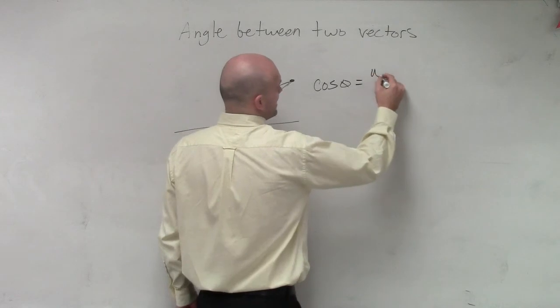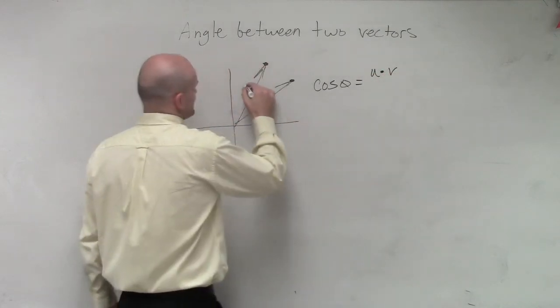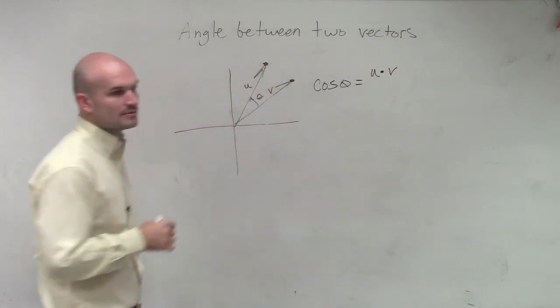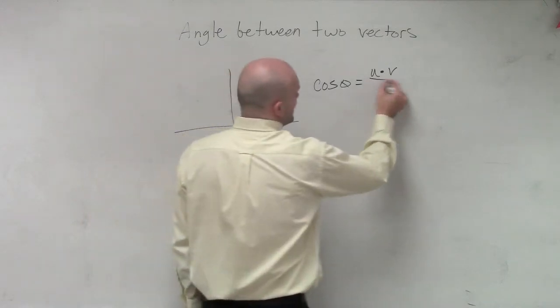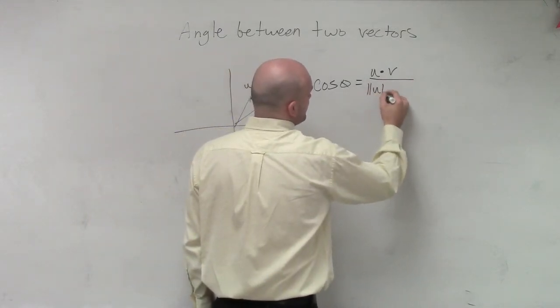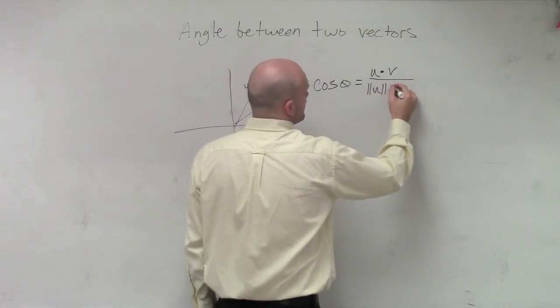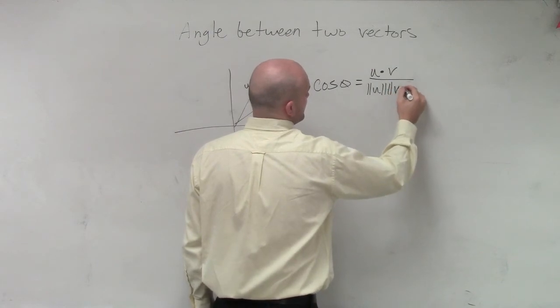equals the dot product of u times v - this is u and this one's v - divided by the magnitude of u times the magnitude of v.